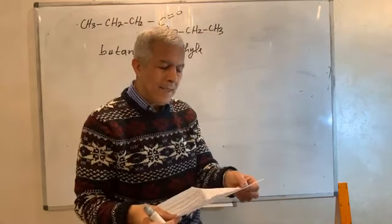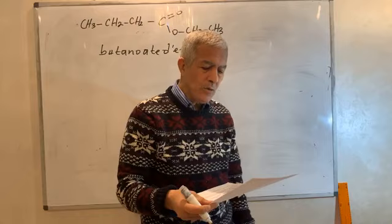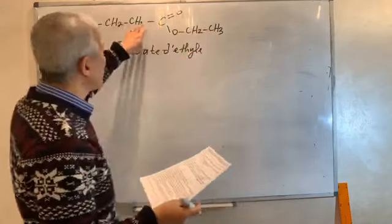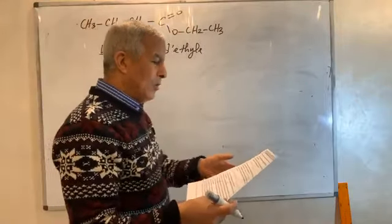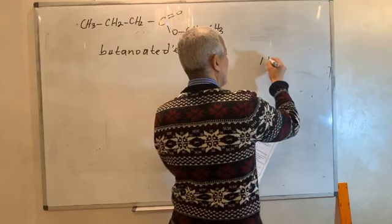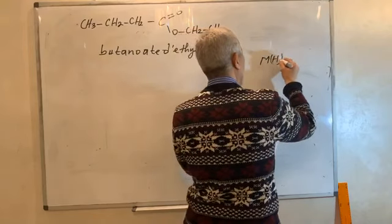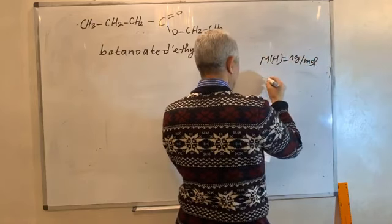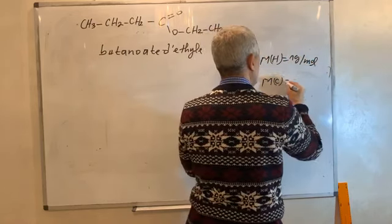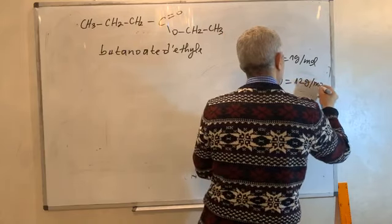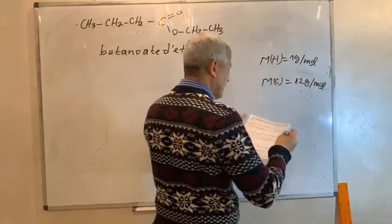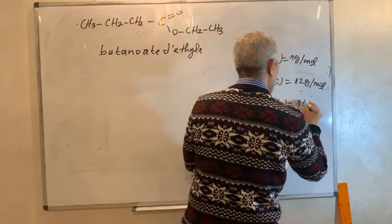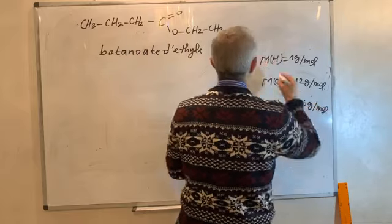L'ester contenu dans l'ananas est le butanoate d'éthyle. Ils ont donné les masses molaires : M(H) = 1 g/mol, M(C) = 12 g/mol, M(O) = 16 g/mol.